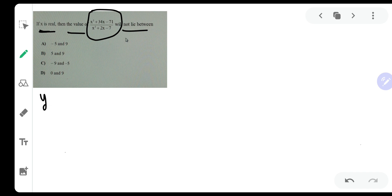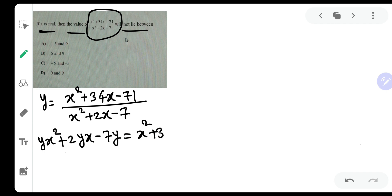So let us say y is equal to x square plus 34x minus 71 upon x square plus 2x minus 7. Now let us cross multiply. So if we cross multiply, yx square plus 2yx minus 7y is equal to x square plus 34x minus 71.